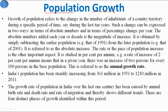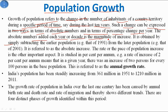Growth of population refers to the change in the number of inhabitants of a country or territory during a specific period of time, say the last 10 years. Such a change can be expressed in two ways: first, in terms of absolute numbers, and second, in terms of percentage change per year. The absolute numbers added each decade is the magnitude of increase, obtained by subtracting the earlier population from the later — this is referred to as absolute increase.